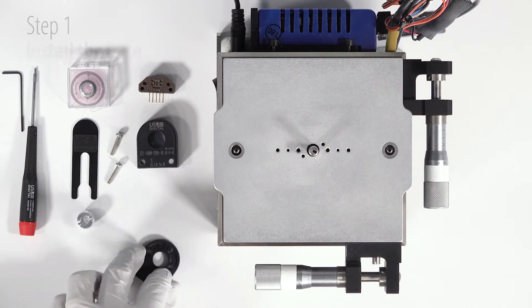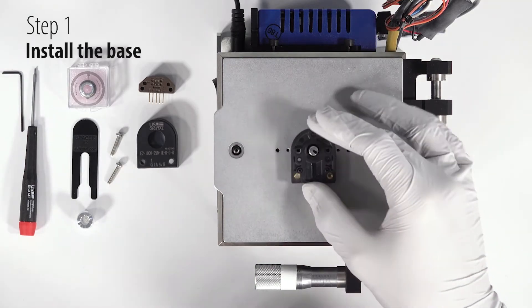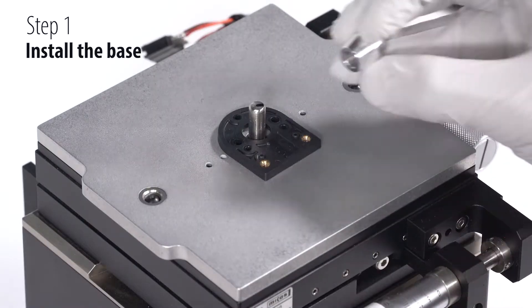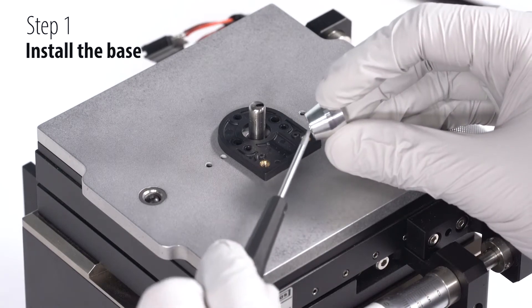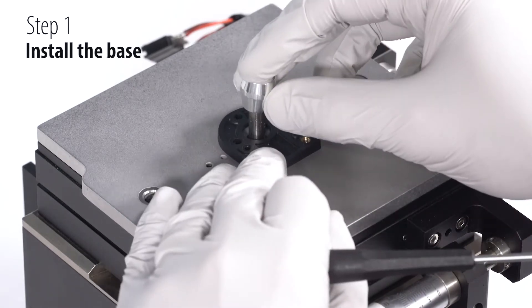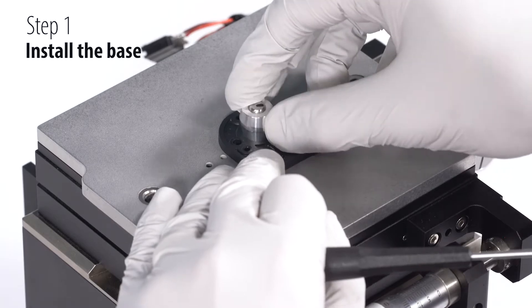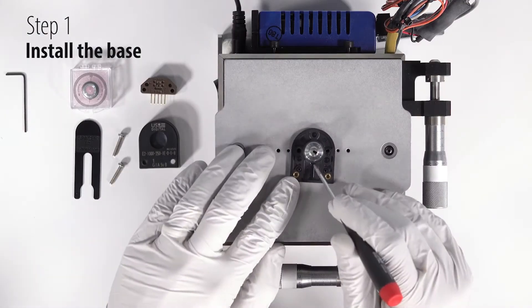Let's get started with step one, installing the mounting base. For this step we'll be using the centering tool with the smaller end of the tool pointed down towards the motor. Push down on the centering tool until it makes contact with the base.